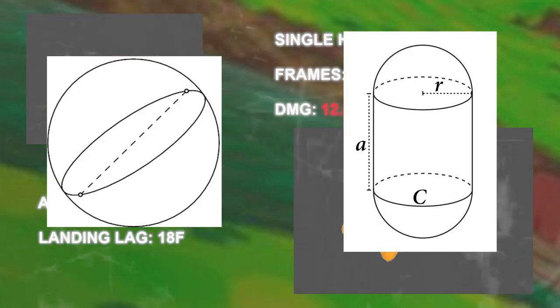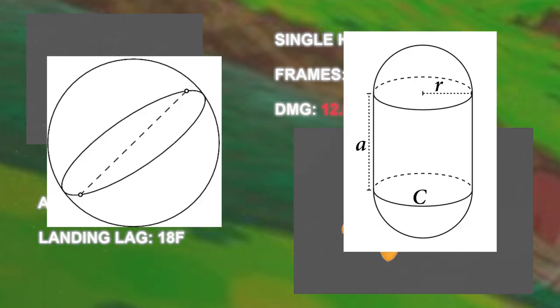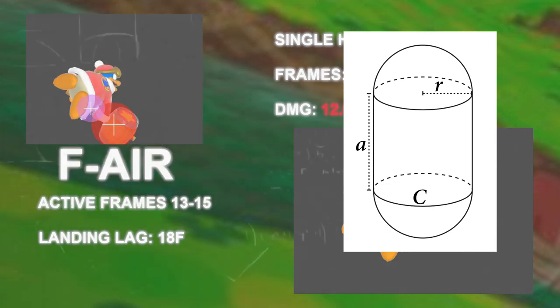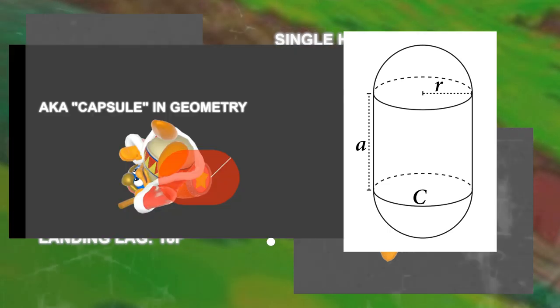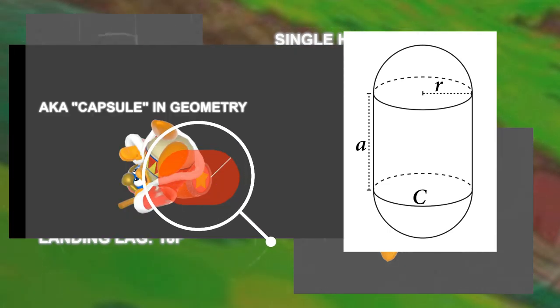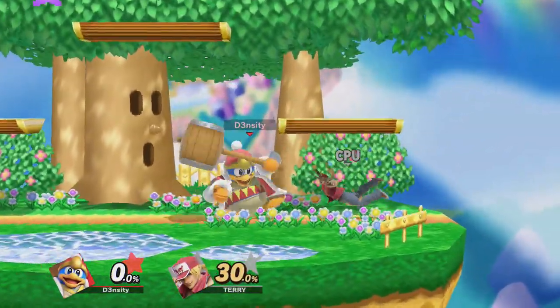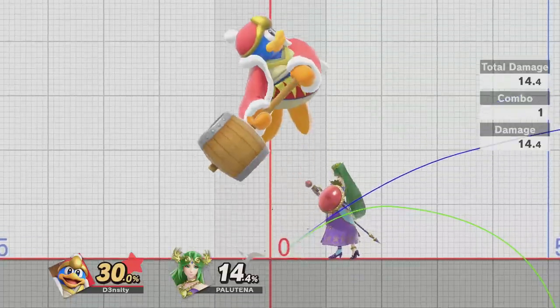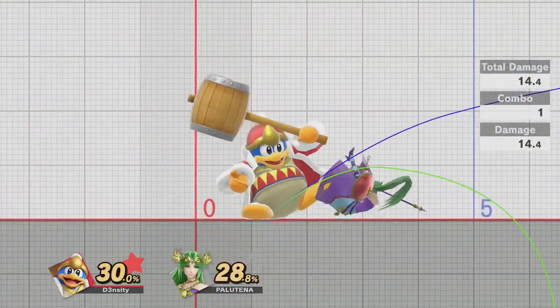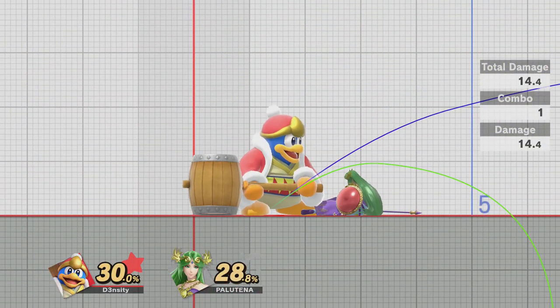So far all the hitboxes have been spheres. Keep an eye out as down tilt will be the first hitbox that is a domed cylinder. Here is an example of fair jab blocking at low percents and tripping despite having no trip chance.